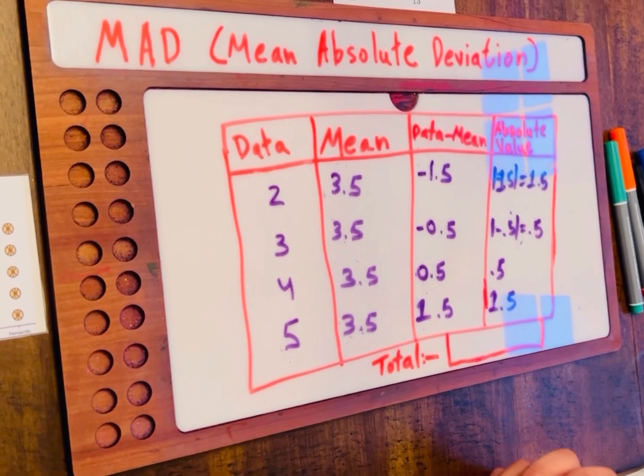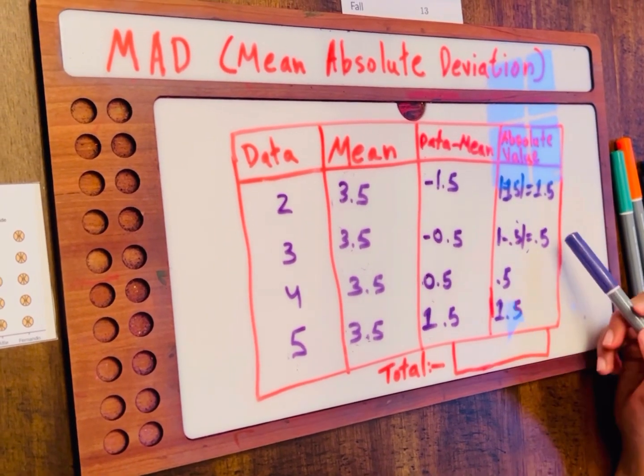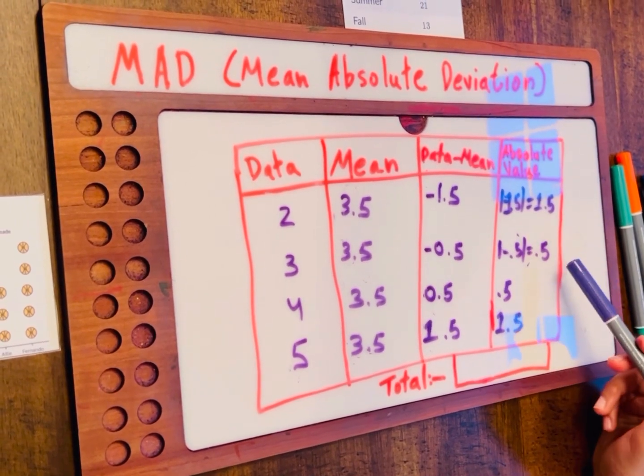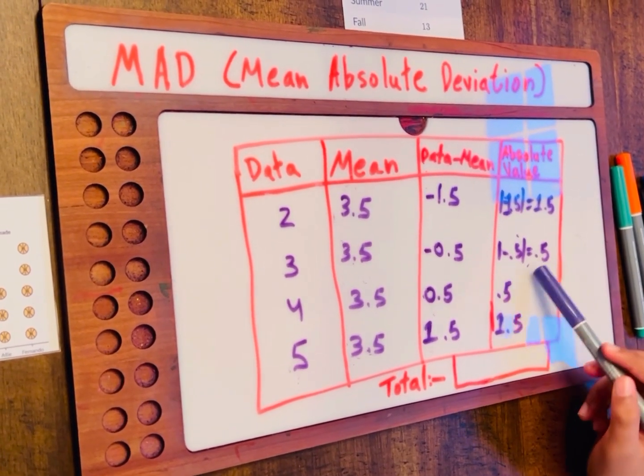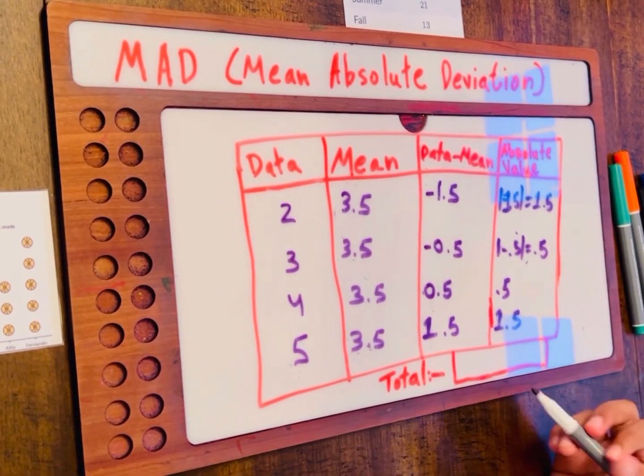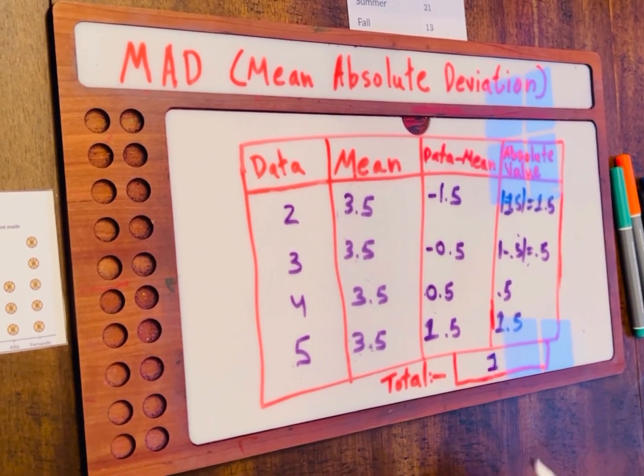Now, we have to find the mean of all of this. 1.5 plus 0.5 plus 0.5 plus 1.5. 1.5 plus 0.5 is equal to 2. And we can do the same over here. And we get 4. 4 divided by 4 is equal to 1. So, the MAD is 1.